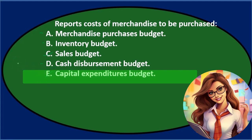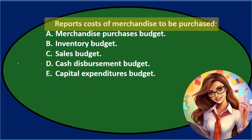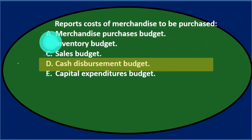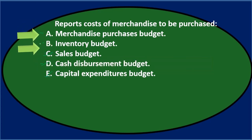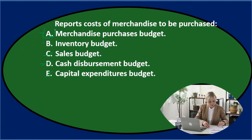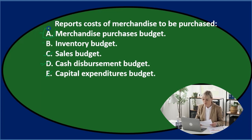So let's go through this again. Reports costs of merchandise to be purchased — either A. Merchandise Purchases Budget, B. Inventory Budget, or D. Cash Disbursement Budget. Of those three, I don't think it's D. I would think it'd be A or B. And A looks almost too exactly like the question to be the answer, but it is. There is no inventory budget typically — we call it the Merchandise Purchases Budget. So A is the final answer.